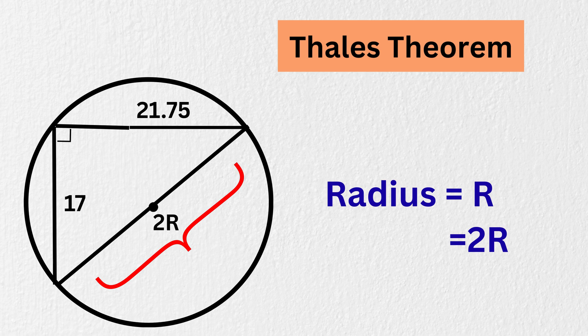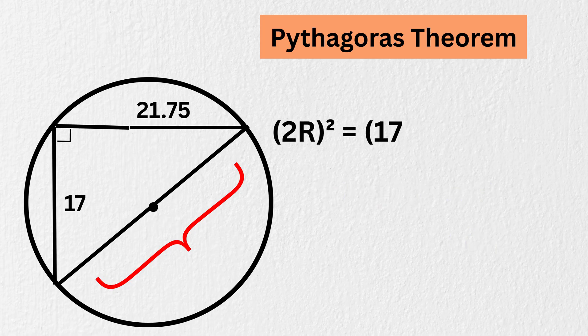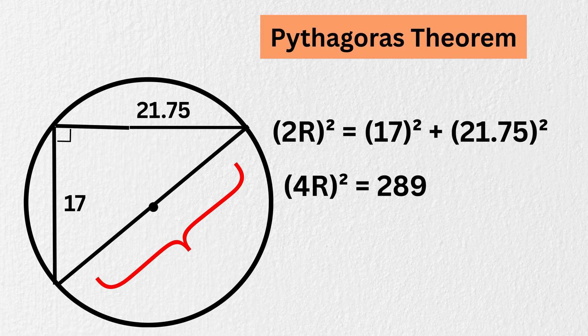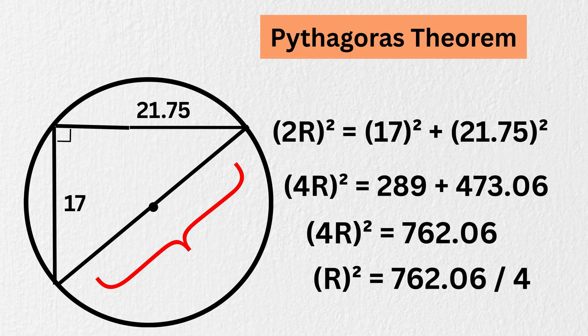So finally, we can use our favorite right angle triangle theorem, which is Pythagoras' theorem here to get 2R squared equals 17 squared plus 21.75 squared. Therefore, 4R squared equals 289 plus 473.06, or 762.06.